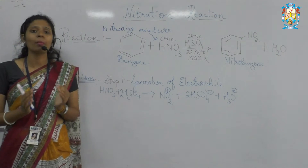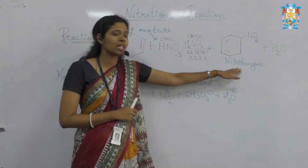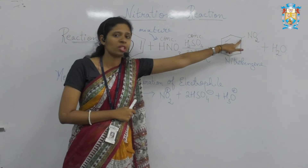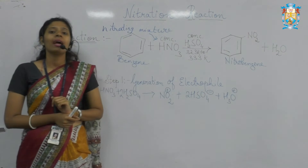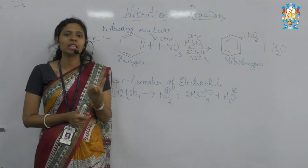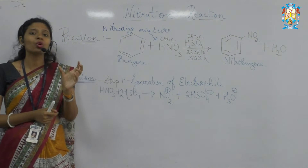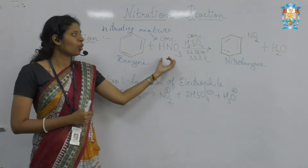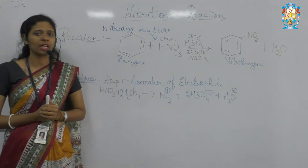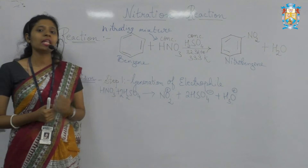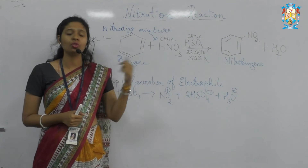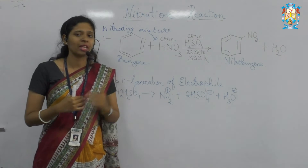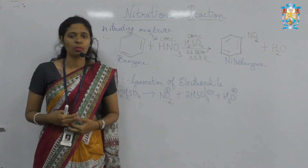Nitration is basically the formation of nitrobenzene. You can see the benzene ring with the NO2 group at position one. Nitration is the attack of the NO2 group on the benzene ring in the presence of the nitrating mixture — nitric acid and concentrated sulphuric acid — at a temperature of 323 to 333 Kelvin. We get nitrobenzene as the product and water as the byproduct.